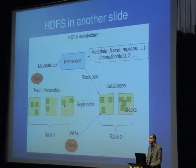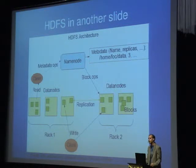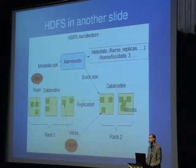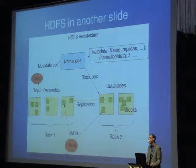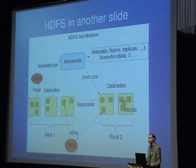Blocks are typically configured to be 64 megabytes in maximum size. If you have a one-megabyte file you'll have one one-megabyte block. If you're writing a 65-megabyte file, the first block will be capped at 64 and you'll have another one-megabyte block after that. When you stream all 65 megabytes in, you'll be transitioning across multiple nodes seamlessly under the hood.